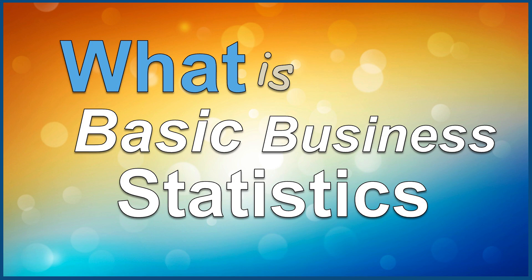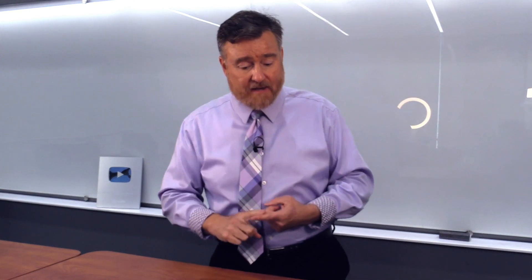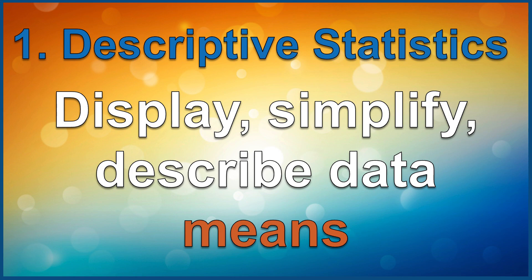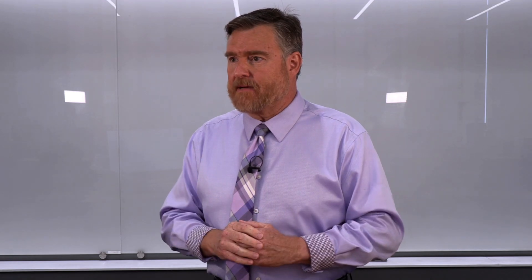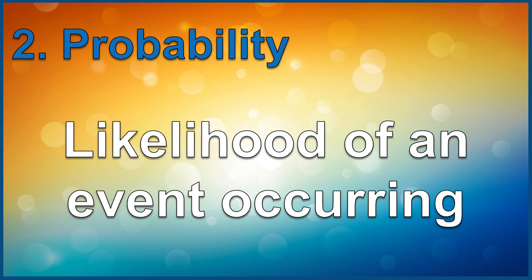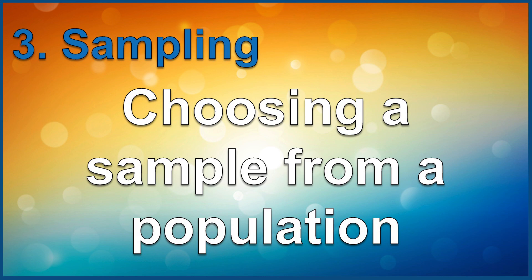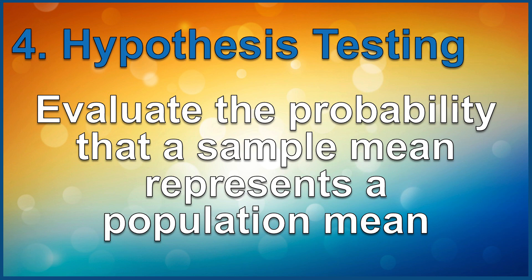So what is Basic Business Statistics, and how are we going to apply these skills? I'm going to teach you essentially four things in this course. Number one: descriptive statistics — taking a group of numbers and displaying them in graphs, quantifying them into means and standard deviations. Second: probability — calculating the likelihood of an event occurring. Third: sampling — learning about samples and populations, and what is true of a sample should be true of the population from which it was drawn. And then we'll combine all three in hypothesis testing — evaluating the probability that the mean of a sample represents the population from which it was drawn.